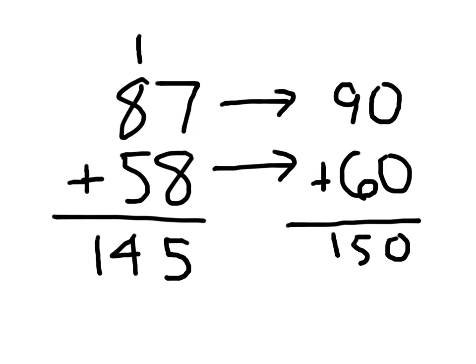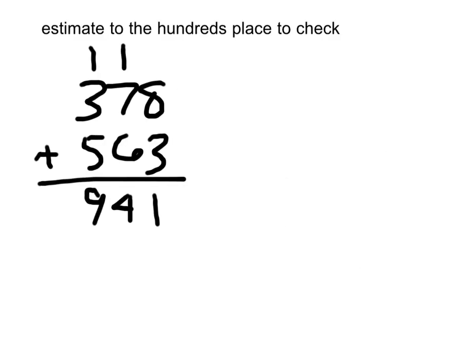Let's take a look at a few more. All right, we have a new problem here. Go ahead and read it with me. 378 plus 563 equals 941. And the instruction says estimate to the hundreds place to check. We're going to take each of those addends and round them to the hundreds place.